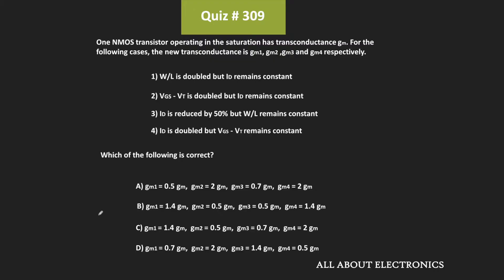Welcome to the YouTube channel all about electronics. In this question, we have been given that for a nMOS transistor operating in the saturation region, its transconductance is equal to gm. In different scenarios for the same nMOS transistor, by varying one of the MOSFET parameters, its new transconductance is measured. We are asked to find the relationship between the new transconductance and the old transconductance.